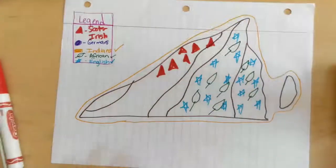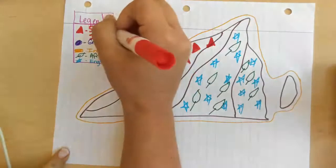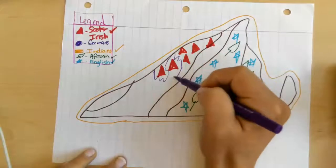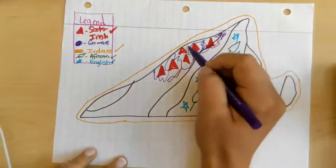All right, and then you're going to take your purple for the Germans. So we have the Scots-Irish represented, we're going to take the purple and you're just going to kind of shade in around because the Germans and Scots-Irish both live there.